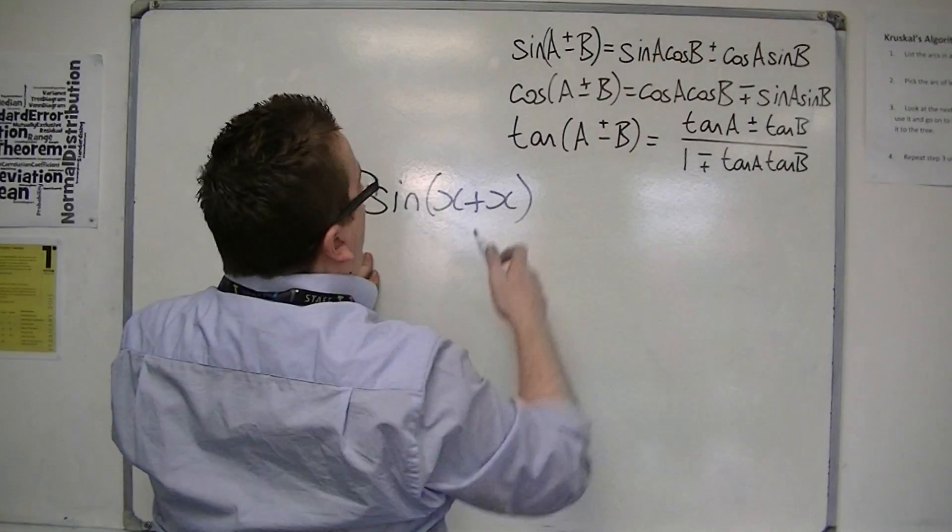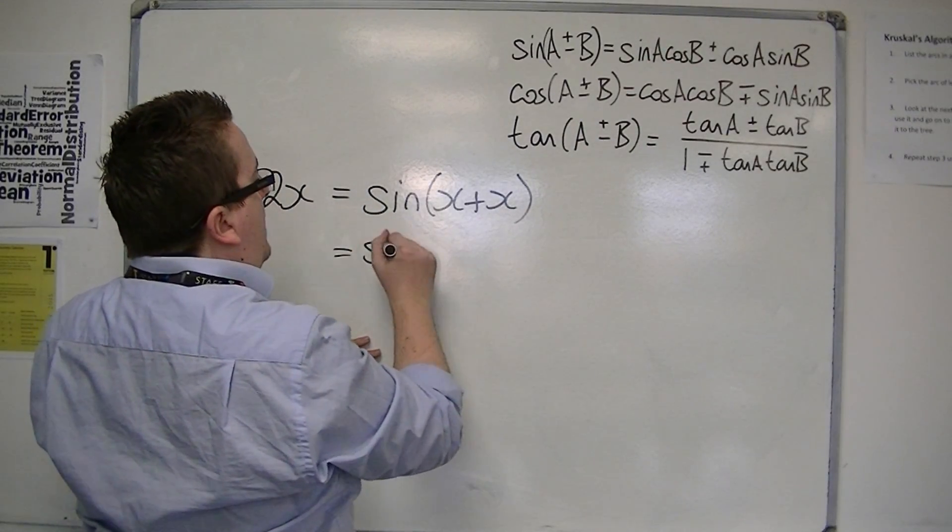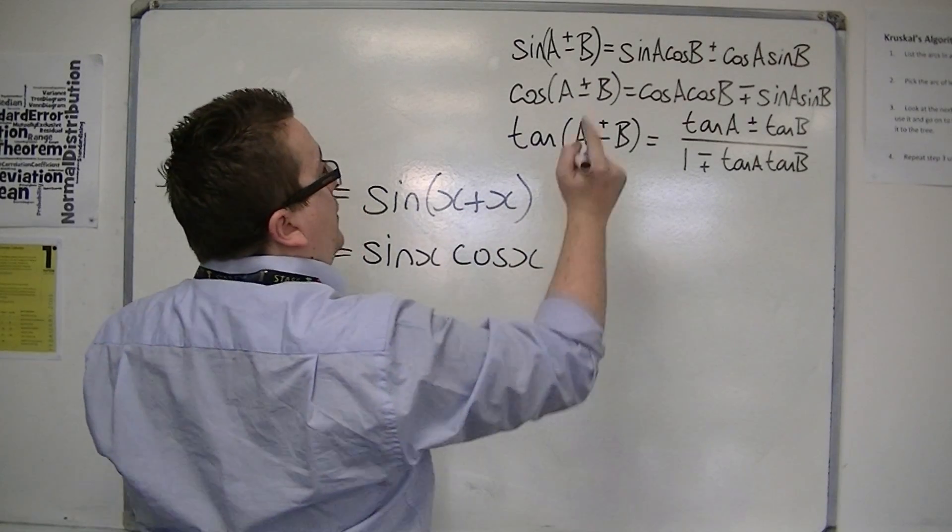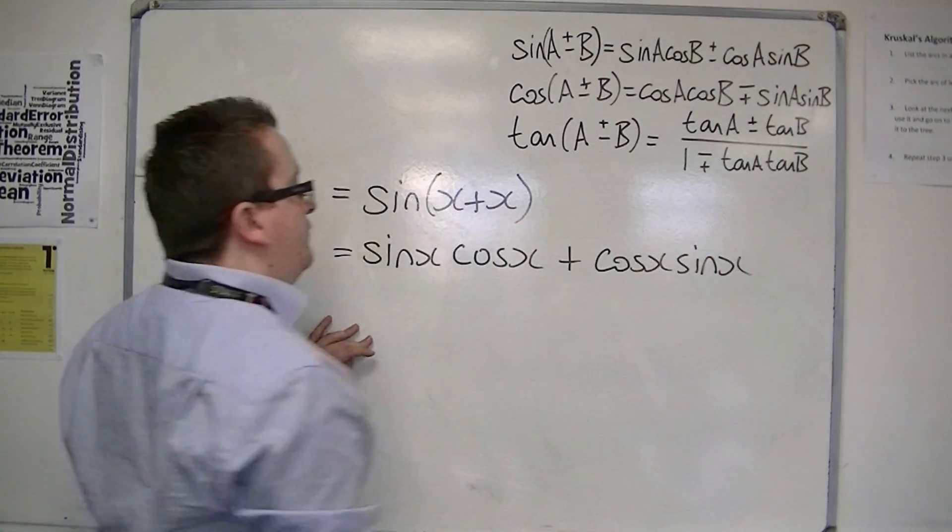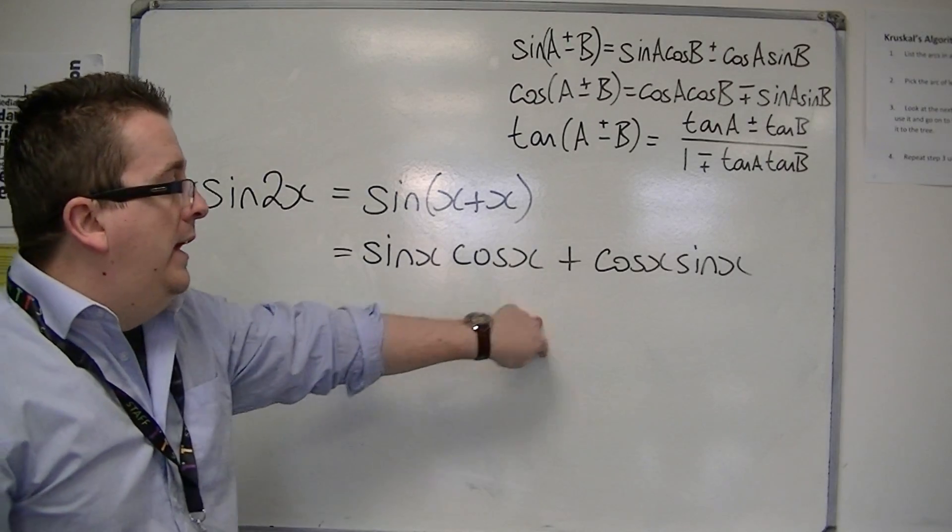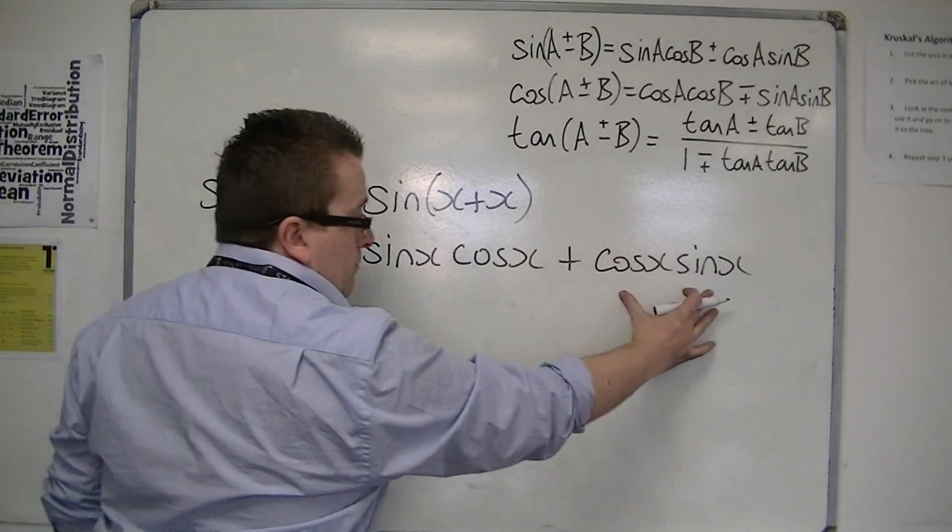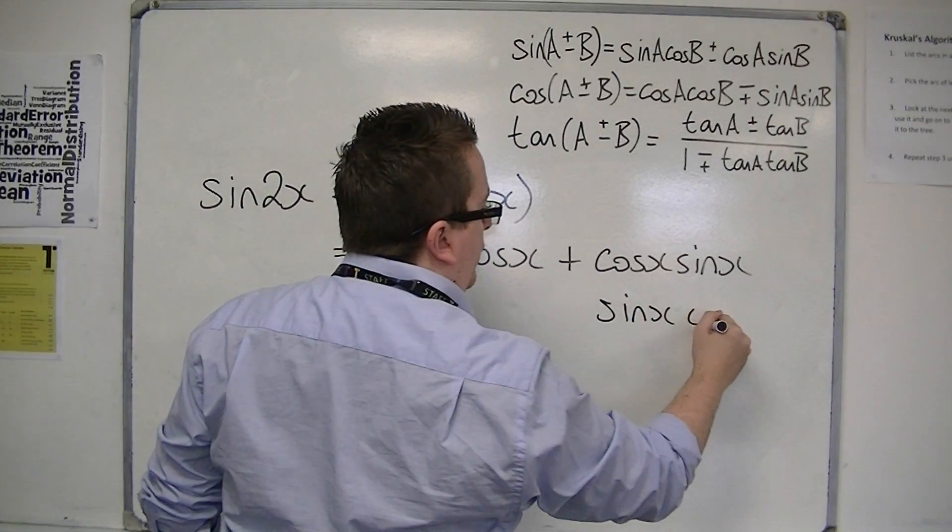So sine of x plus x. If a is x and b is x, then we have sine x cos x, and then we've got a plus, cos x sine x. So here I've got sine x cos x and sine x cos x, because I can flip those round and rewrite that as sine x cos x.